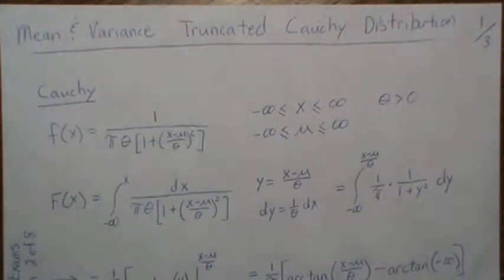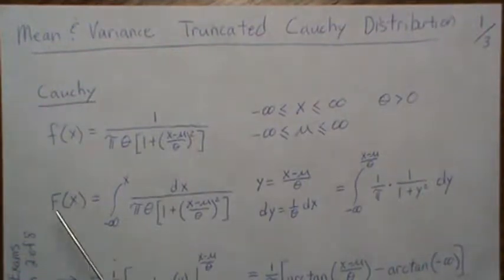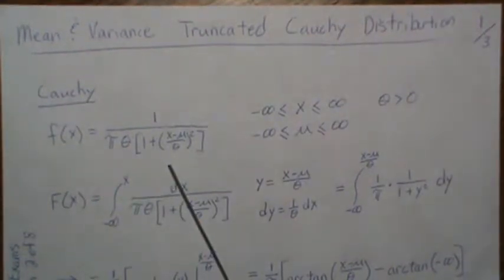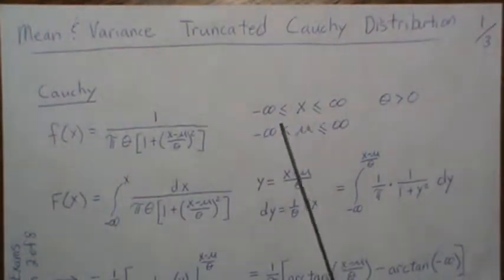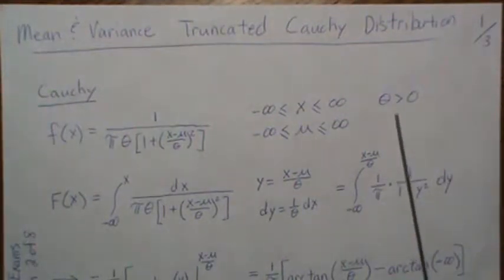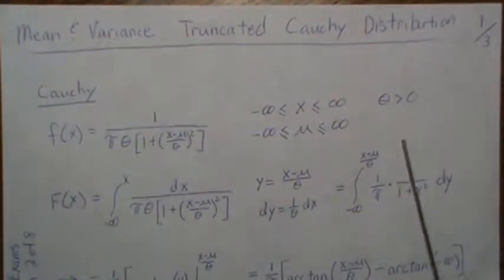First we need to look at some of the properties of a Cauchy, and here this is the density of a Cauchy distribution. X is a real number, mu is a real number, theta is positive.